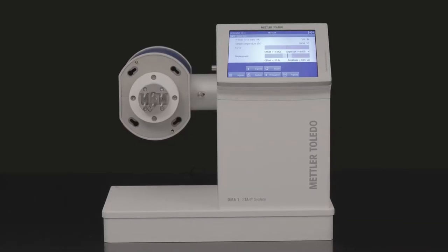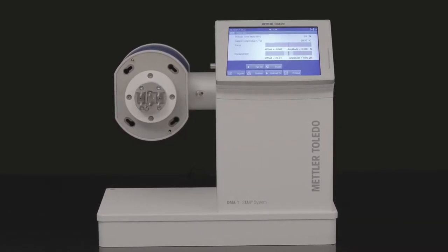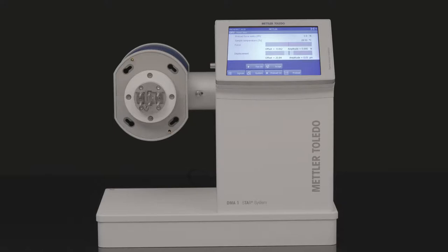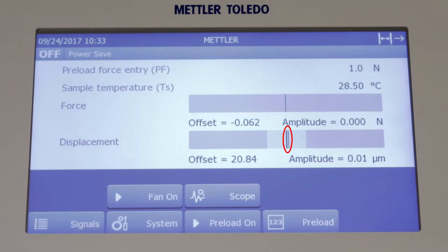The instrument zero position is indicated by the vertical black line in the displacement bar graph in the preparation dialog on the touch screen. When no sample is loaded, the static displacement indicator should coincide with the instrument zero position.